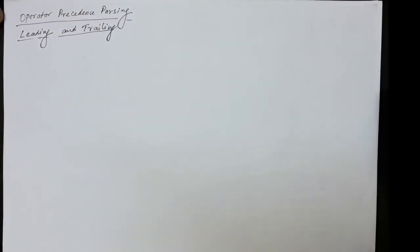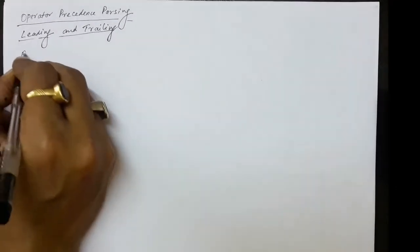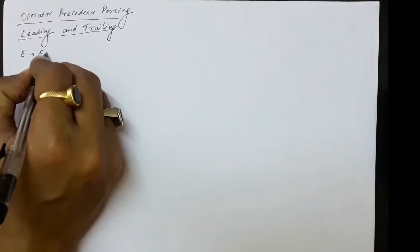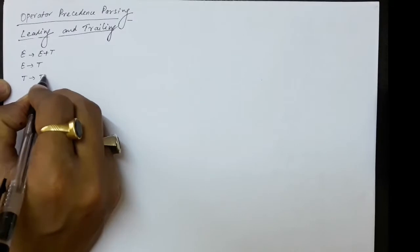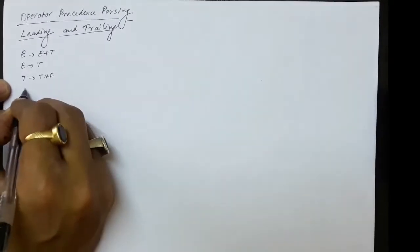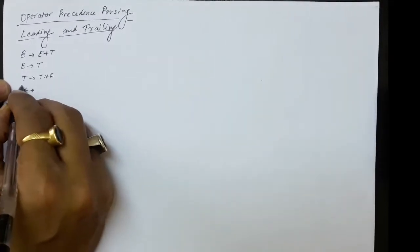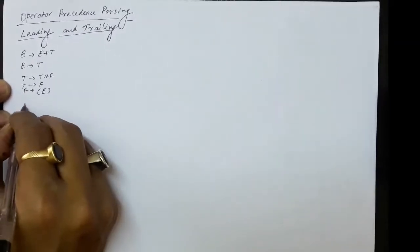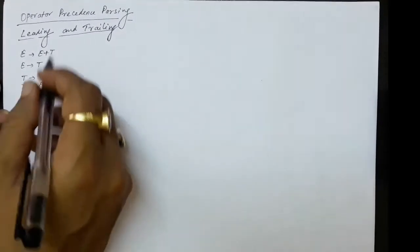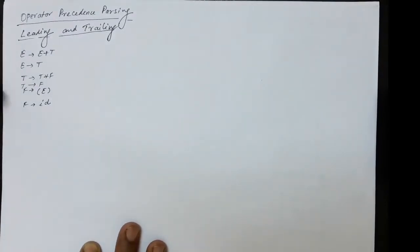In this lecture, we will discuss the primary things that need to be computed for operator precedence parsing - those are the leading and the trailing functions. For example, let's say we have production rules: E produces E plus T, E produces T, T produces T star F, T produces F, F produces (E), and F produces ID. We need to check if this given grammar is an operator grammar or not.